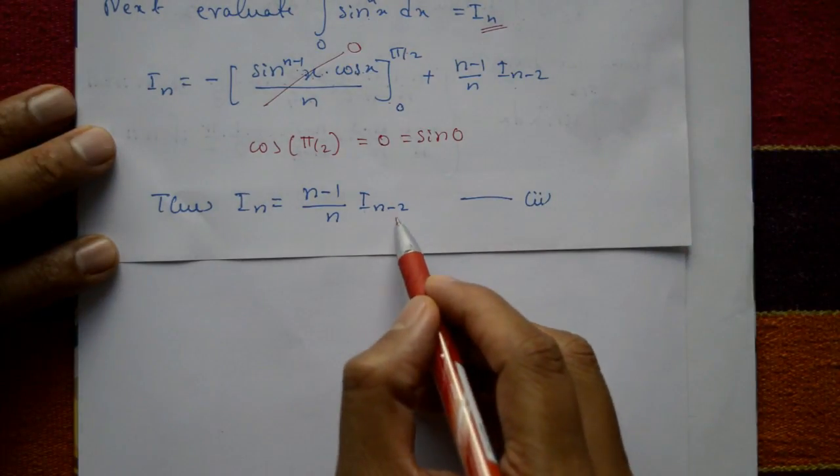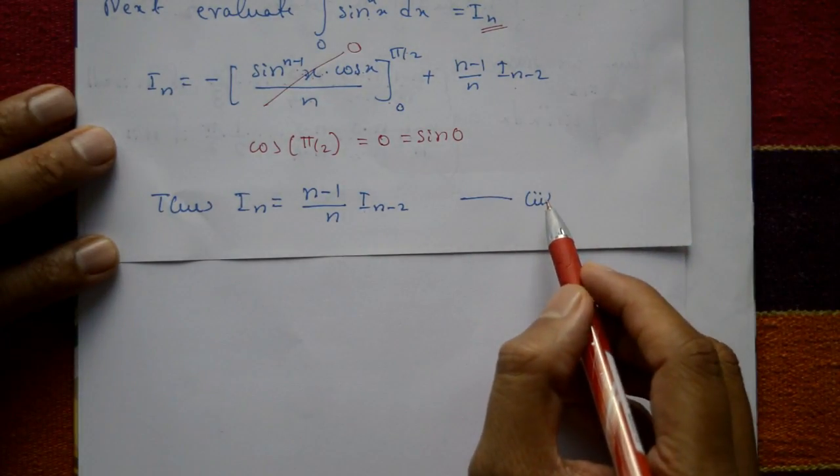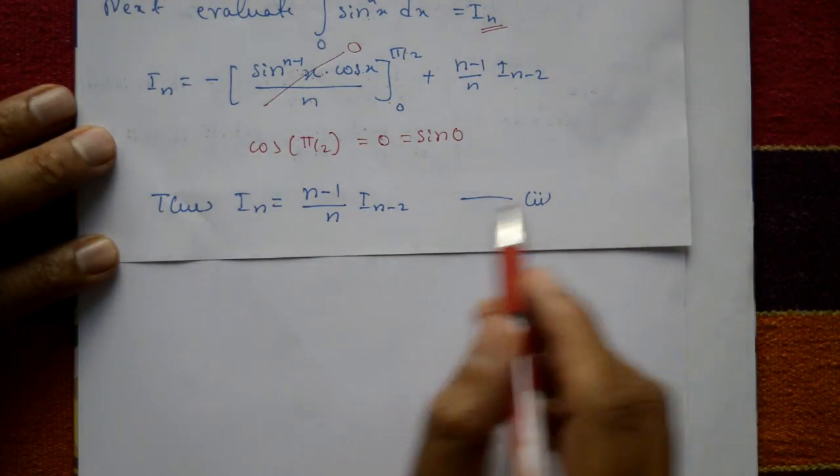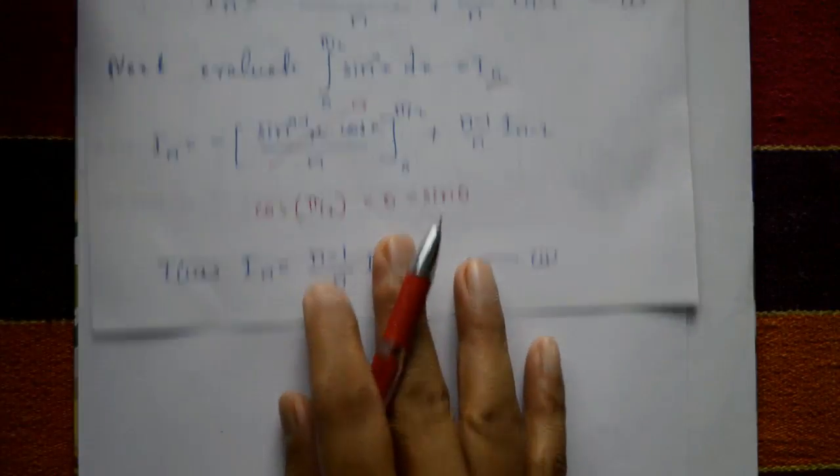Therefore Iₙ = (n−1)/n · Iₙ₋₂, which is Equation 2. This is the recurrence relation for the definite integral from 0 to π/2 of sinⁿx dx.